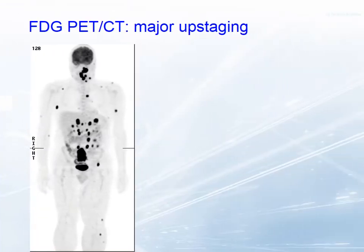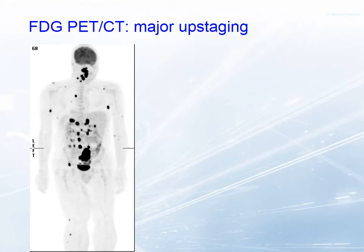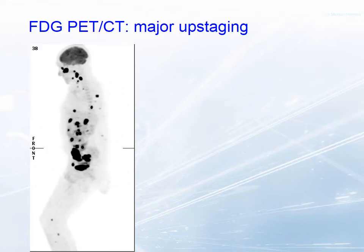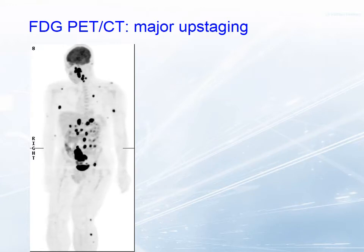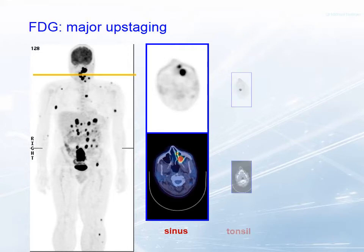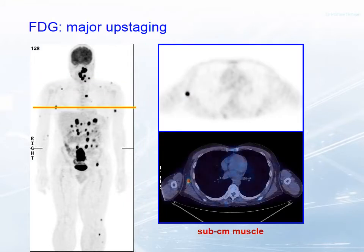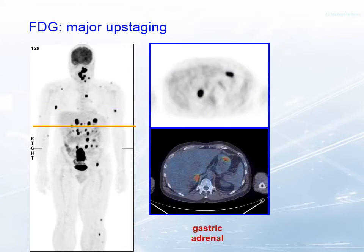Nowadays we perform an FDG PET scan. We inject radioactive sugar, and tumors — particularly the more aggressive ones — use sugar as their metabolite for growth, and they light up very brightly. It's difficult to believe this patient only has a single abnormality on conventional CT. We can see metastases lighting up in odd places: the sinus, the palatine tonsil. We can visualize with quite high confidence sub-centimeter muscle metastases, a gastric metastasis — which was the cause of the patient's symptoms — and the adrenal metastasis, which was thought to be solitary.